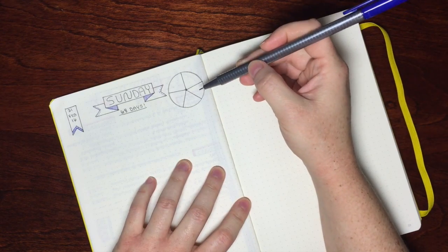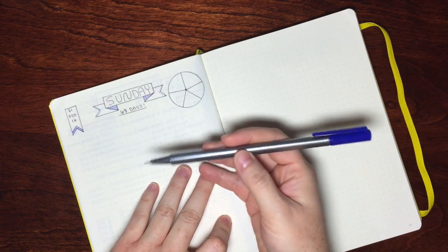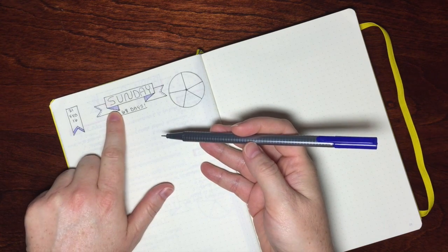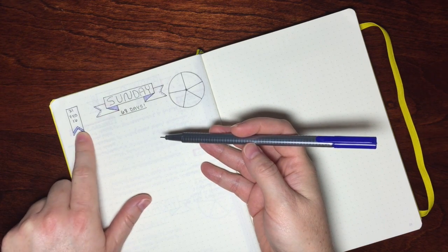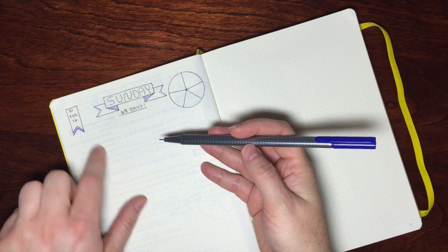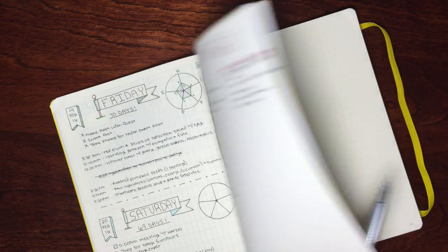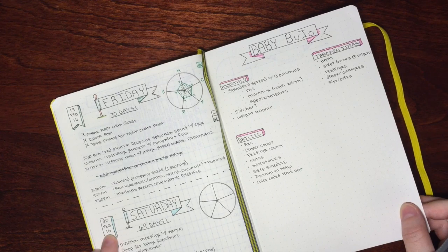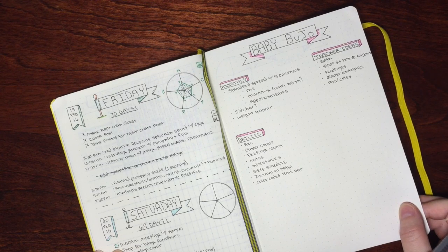I then come back at the end of the day with a color. I try to use the same color for the entire day. I use it as my accents here in my headers. And also when I have an appointment, as you can see here, I use the color to also mark off that I've gone to that appointment.